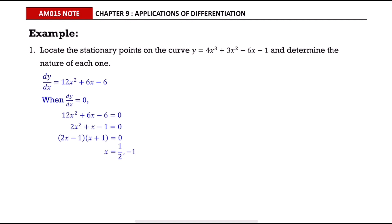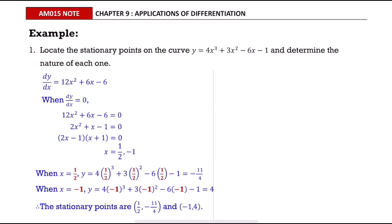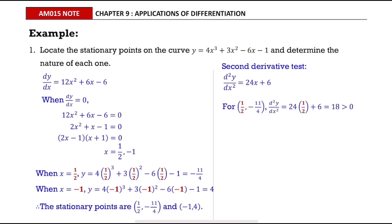After that, find the values of y by substituting x = 1/2 and x = -1 into the equation and state the stationary points. We use the second derivative test to determine their nature. Find the second derivative by differentiating the first derivative, then test the point (1/2, -11/4) by substituting 1/2 into the second derivative, where the value is equal to 18.